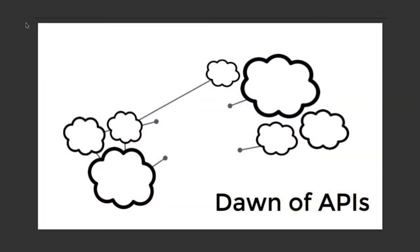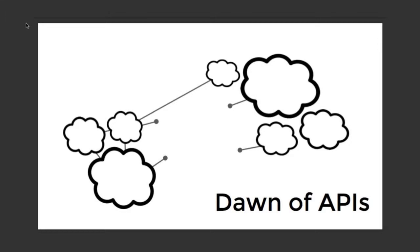Before I dive into ARIA itself — what it is, what it does, and how it operates — I want to talk about what's happening today and for the past 10 years in the industry. We've seen a lot of clouds, services, and components being introduced, a lot of new technologies like AWS becoming very popular, and OpenStack at the OpenStack Summit introducing lots of new APIs we can consume.